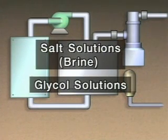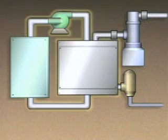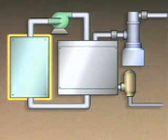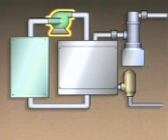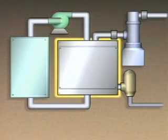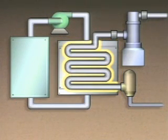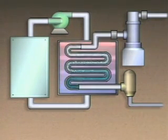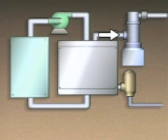Secondary cooling systems typically use coolants such as salt solutions, called brine, or glycol solutions. Both types of solutions have freezing points lower than the freezing point of water, allowing the secondary cooling system to operate at lower temperatures than systems that use water as a coolant. In our example, the brine flows through process equipment where it absorbs heat and cools the equipment. A pump creates flow through the brine cooling system, and the brine is then pumped to a heat exchanger — which is the evaporator in the refrigeration system. In the evaporator, the brine acts as the heat source and its heat is absorbed by the refrigerant, which changes to a vapor and flows on through the rest of the refrigeration system. The cooled brine is directed back to the process equipment and the cycle continues.